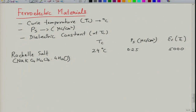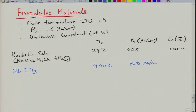At T_c there is an anomaly in the dielectric constant - it increases suddenly. Rochelle salt has a complex crystal structure. Perovskite-structured lead titanate (PbTiO₃) has a very high T_c of 490°C, remaining ferroelectric up to very high temperature. It has a polarization as high as 750 μC/cm², though in polycrystals this value is not observed, and the dielectric constant is immeasurably high.